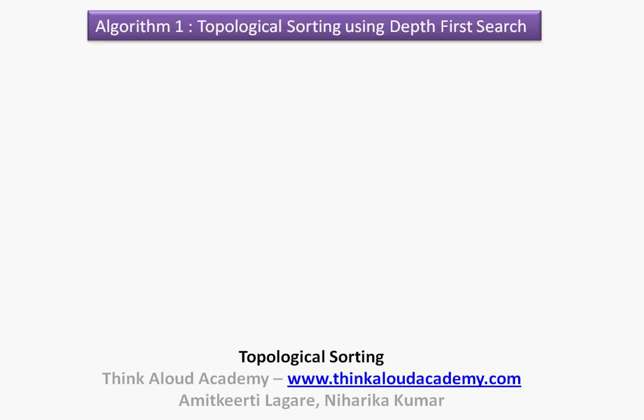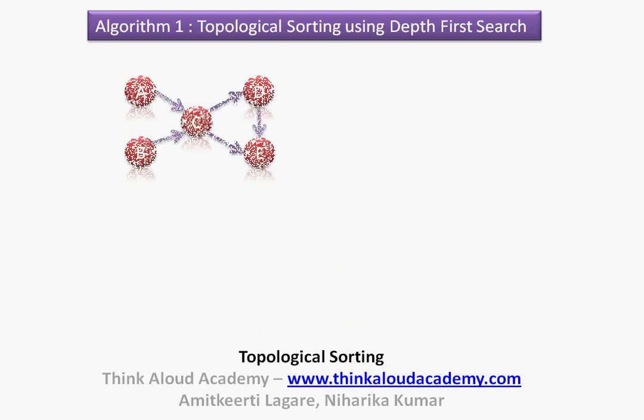Now let us try to find the topological sorting using depth first search — this would be our first algorithm. Let us assume we have a graph with five vertices connected as shown. I will use a stack to find the topological sorting for this graph.